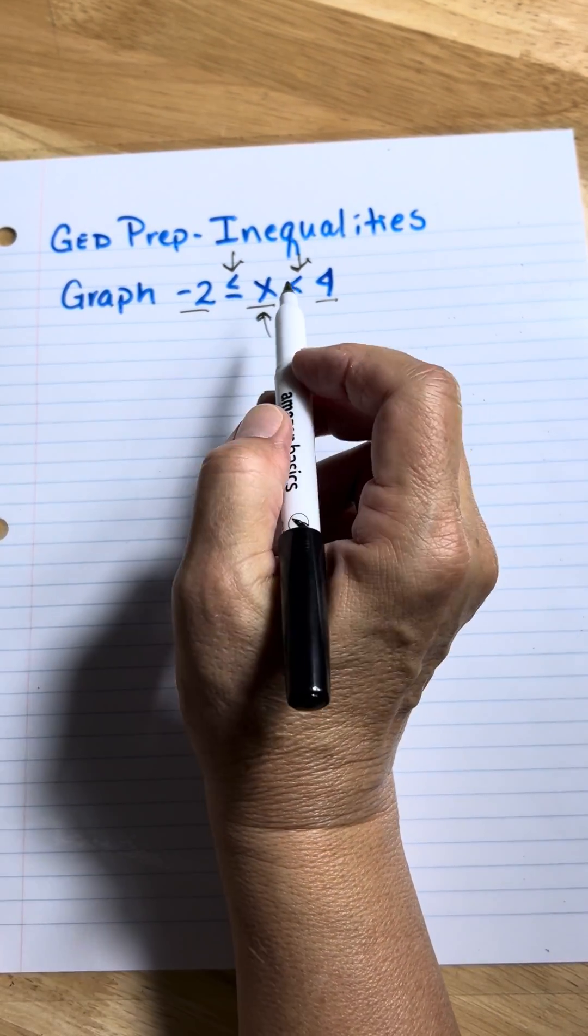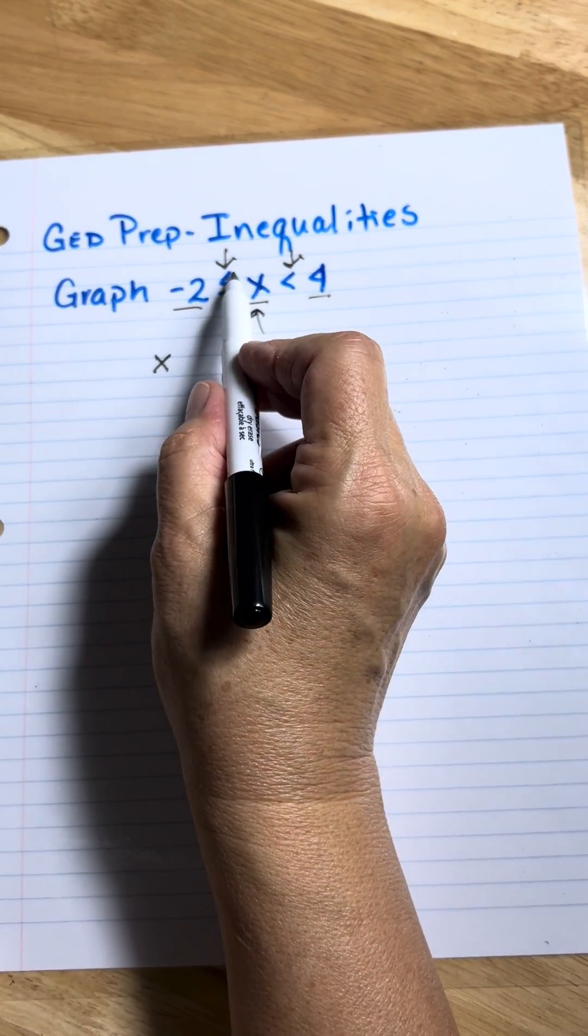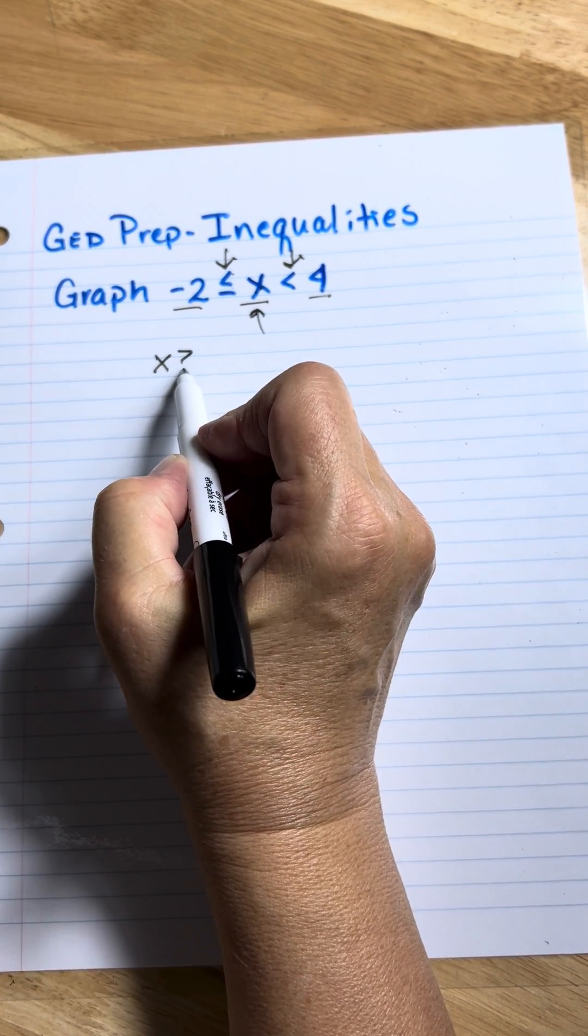Split it right here in the middle. So we're going to take the X and we're going to put X. Now whatever end of the inequality sign points to X now, it's got to point to X here.